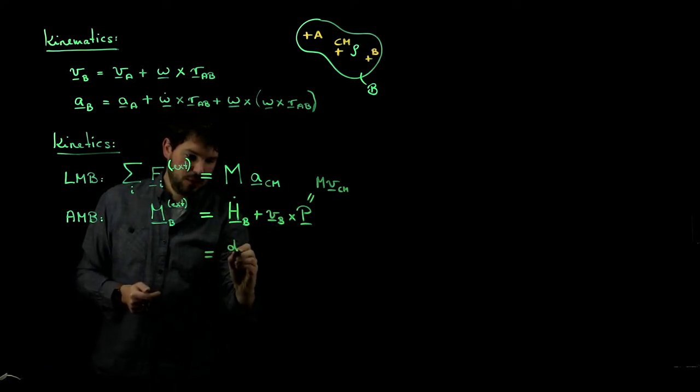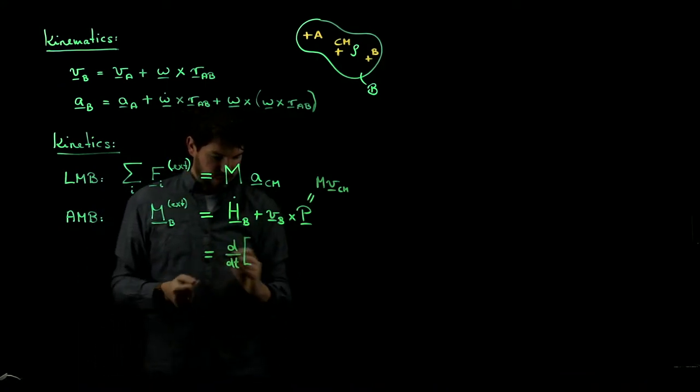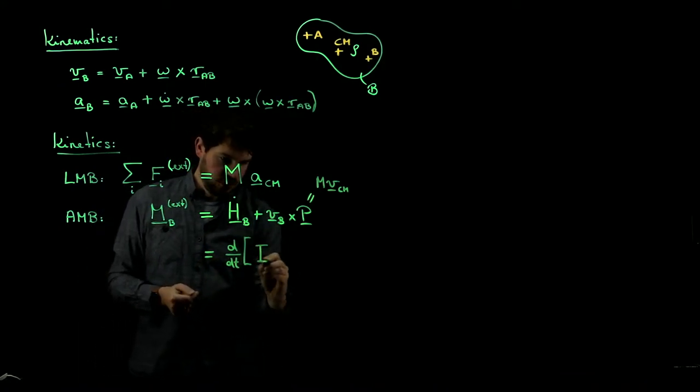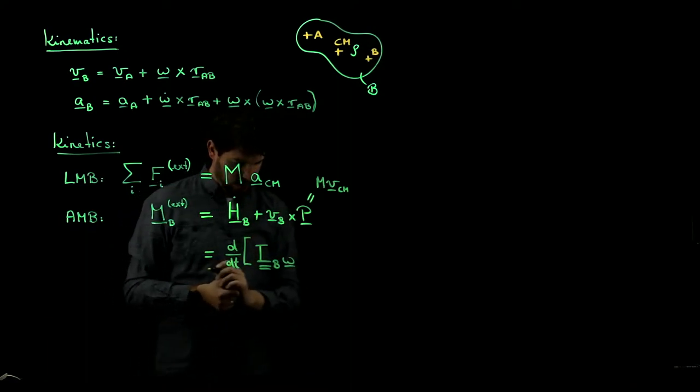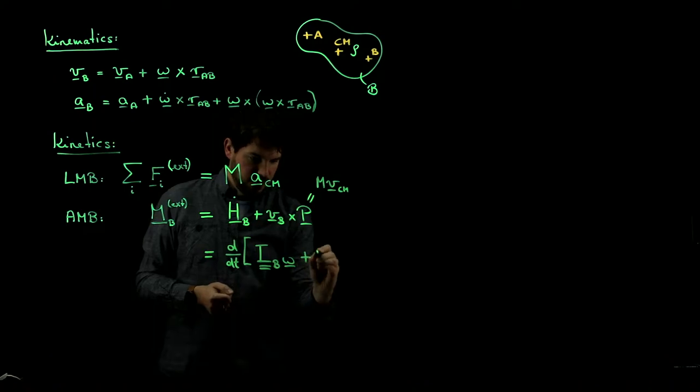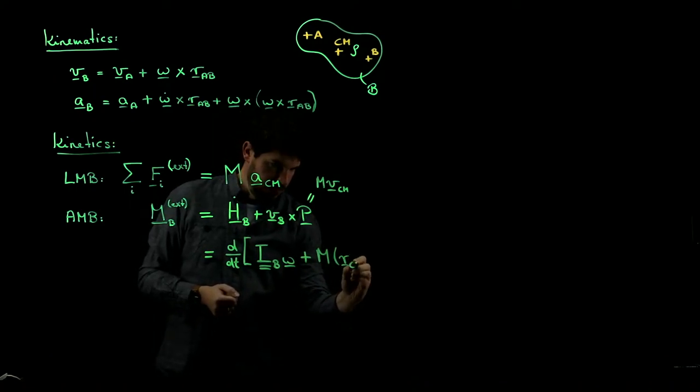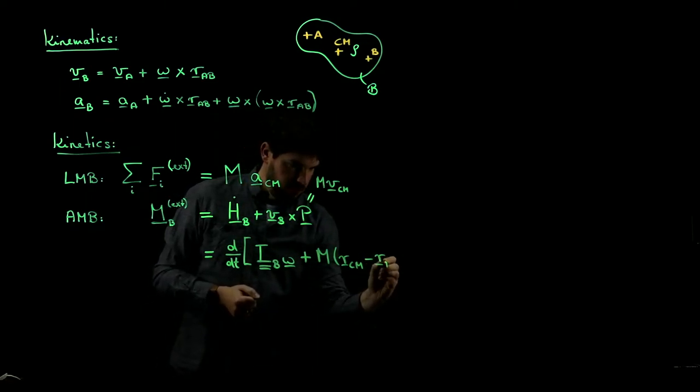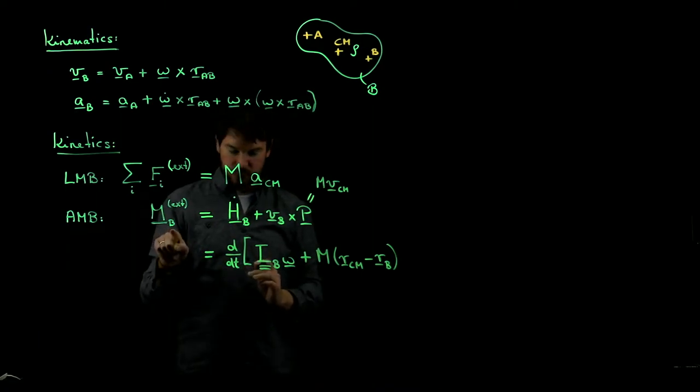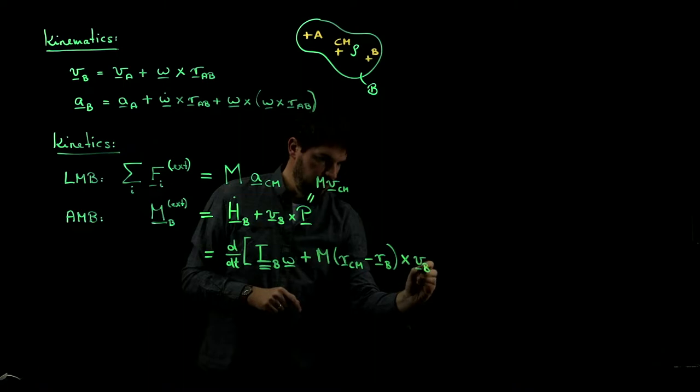And if we want to write this out, what it becomes is d by dt of, first, we have a term that involves this moment of inertia tensor, Ib times omega. I'll get to this in just a moment. Then we have plus the total mass times the distance vector, or the position vector of the center of mass, minus the position vector of point B, the one with respect to which we want the angular momentum, cross Vb.